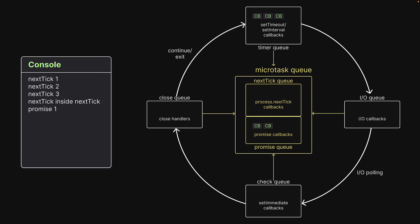The first callback in the promise queue is dequeued and executed on the call stack, printing a message to the console. The second callback has a similar effect, but in addition to the log statement, it also adds a callback to the next tick queue. Next, the third callback in the promise queue is executed, resulting in the next log message. At this point, the promise queue is empty and the event loop checks the next tick queue — there is one callback and it is executed. Now both microtask queues are empty and the event loop moves on to the timer queue.